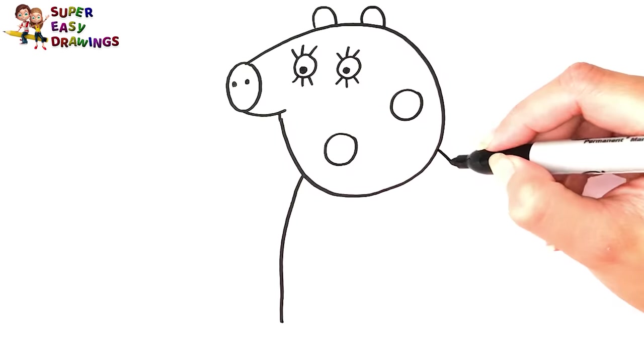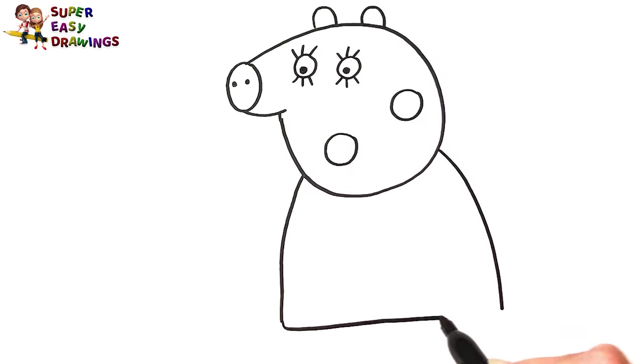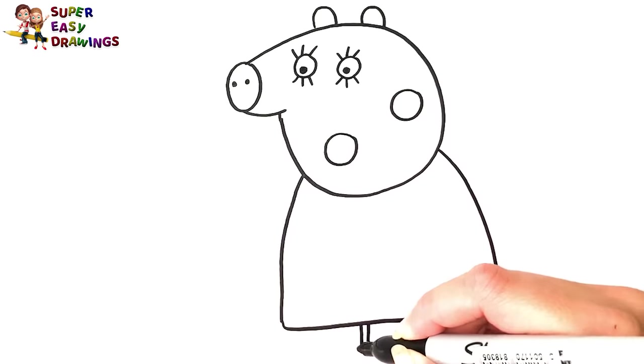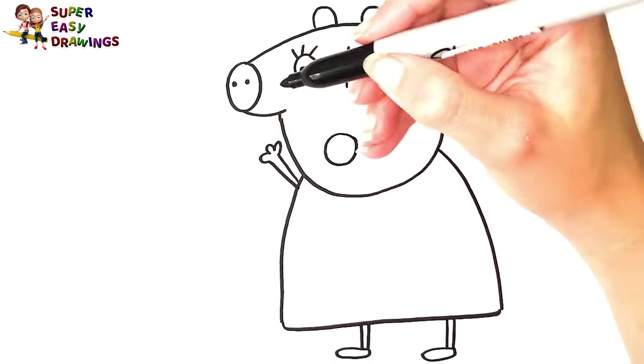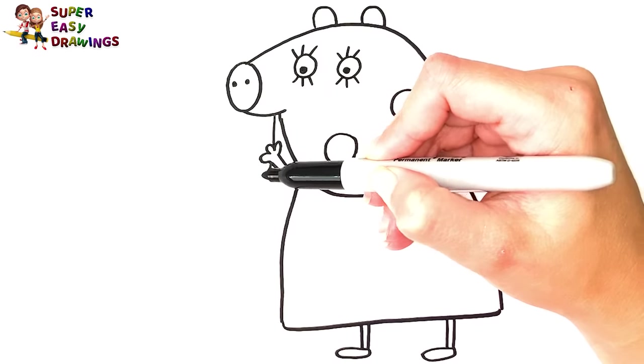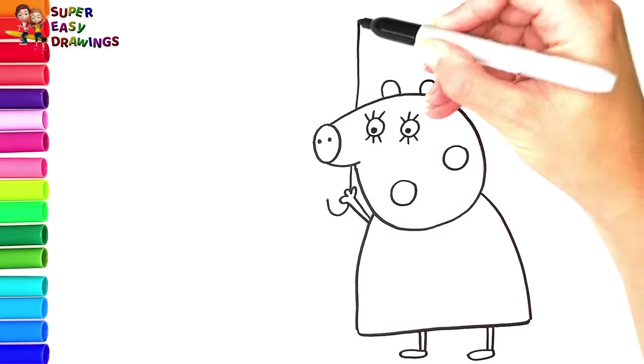I draw her body and her two legs. I draw her arm. In her hand, she is holding an umbrella.